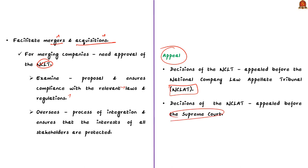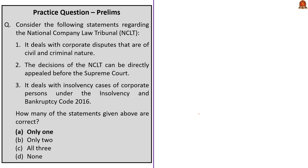Note that if anyone is aggrieved by the decisions of the NCLT, they can make an appeal before the NCLAT — that is the National Company Law Appellate Tribunal — and all decisions of the NCLAT can be challenged before the Supreme Court. Now let us go back and solve the MCQ. Statement 1 says NCLT deals with corporate disputes of both civil and criminal nature — this is incorrect, as NCLT deals only with corporate civil disputes. Statement 2 says decisions of NCLT can be directly appealed before the Supreme Court — this is incorrect, as NCLAT has been created for such appeals. Statement 3 says it deals with insolvency cases of corporate bodies under IBC — this is correct. So the correct option is option A.